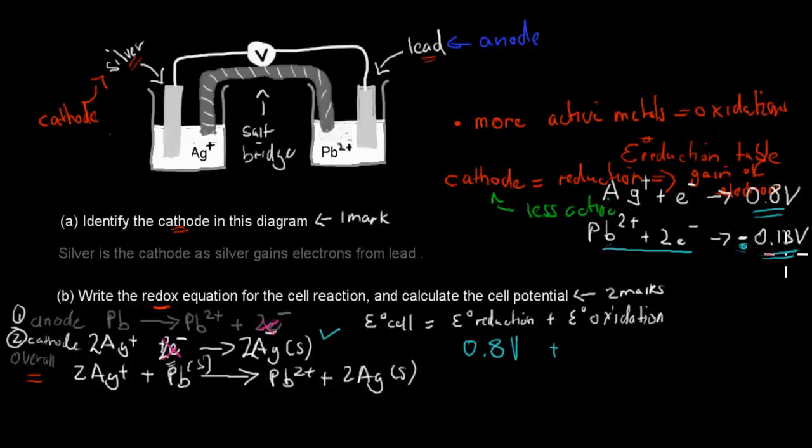So, instead of writing minus 0.13, we write 0.13 plus volts. And then we add it all together, and our overall voltage is 0.96 volts. And that's our second mark for this, because we calculated it.